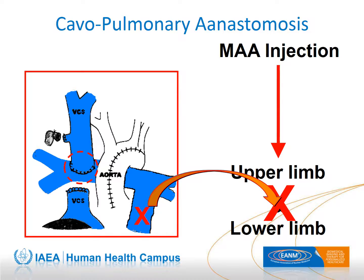When a cavopulmonary anastomosis is created, the superior vena cava drains into the right pulmonary artery, and therefore macro-aggregates must be injected in one of the upper limbs. If there is no pulmonary flow from the main pulmonary artery, no other injection is necessary. However, if there is flow from the main pulmonary artery, a second injection in a lower limb is necessary. In this case, the total dose is split in two.